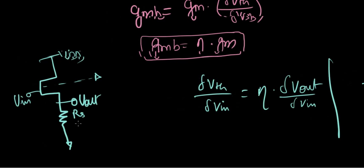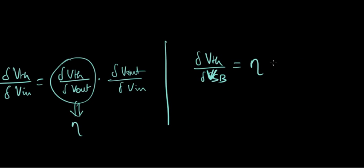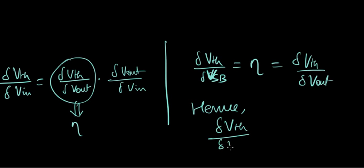For this structure, the common drain, Vsb is what? This is the source and this is the bulk. So Vs minus Vb equals Vout minus 0, so it's just Vout. This can be set as equal to delta Vth over delta Vout. Hence, delta Vth over delta Vin can be written as eta times delta Vout over delta Vin.